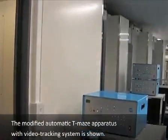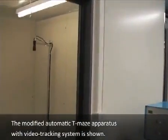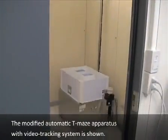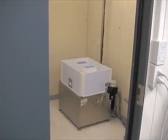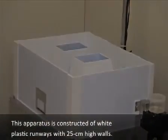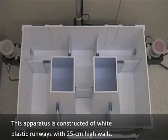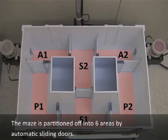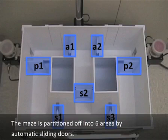The modified automatic T-Maze apparatus with video tracking system is shown. This apparatus is constructed by white plastic runways with 25cm high walls. The maze is partitioned off into 6 areas by automatic sliding doors.